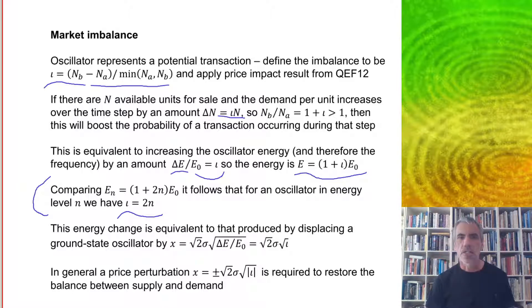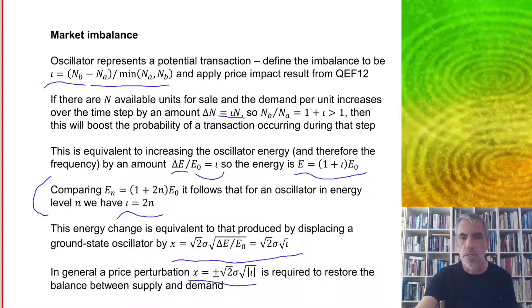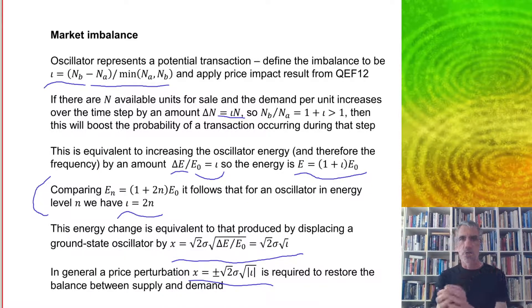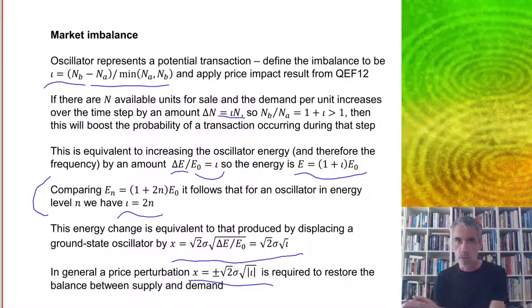And this energy change is equivalent to that produced by displacing a ground state oscillator by x equal to square root of 2 times sigma times the square root of IOTA. And in general, a price perturbation can be positive when there's more demand or negative when there's less demand. So the formula is x equals plus or minus square root of 2 times sigma times the square root of the absolute value of IOTA where the sign depends on the sign of IOTA.